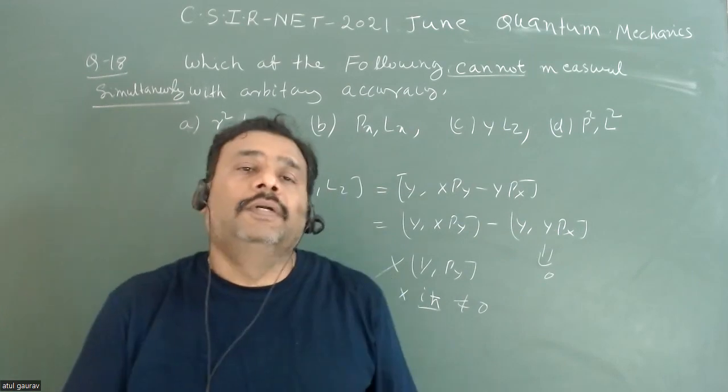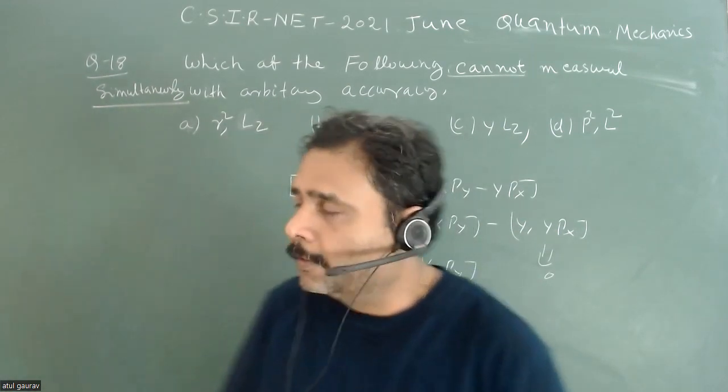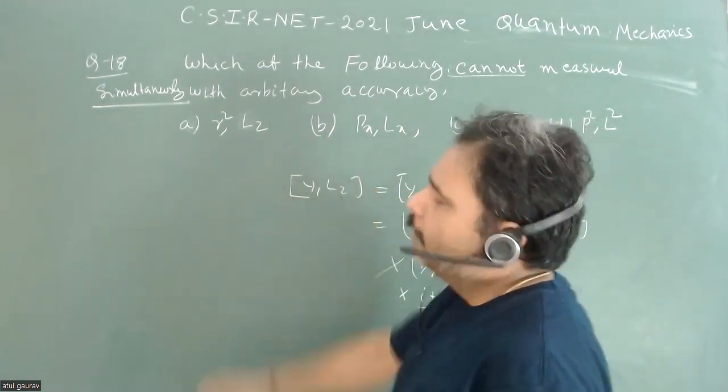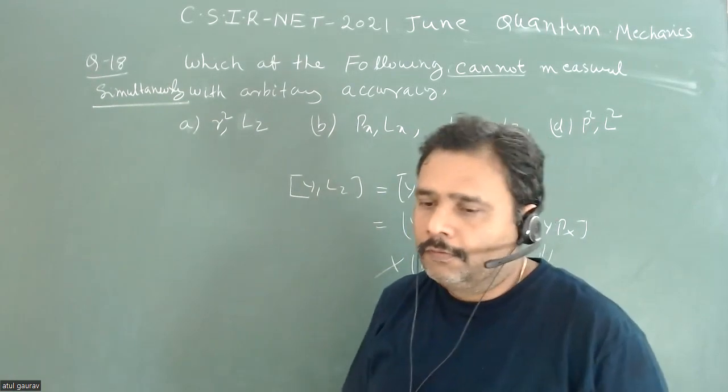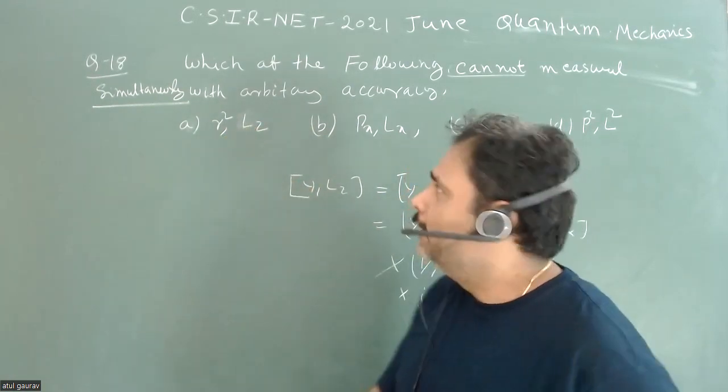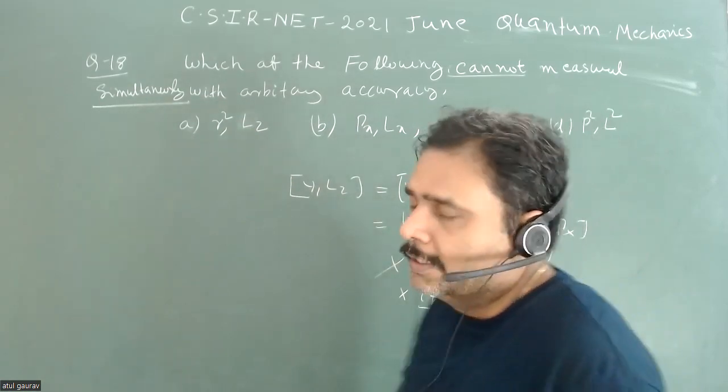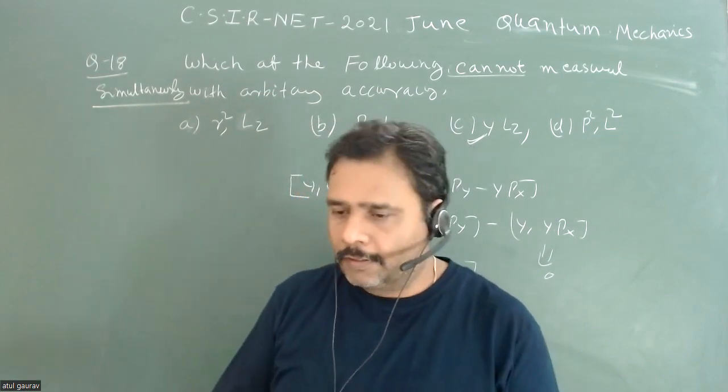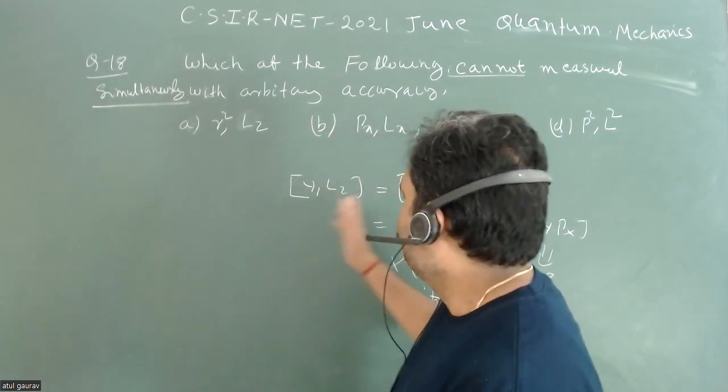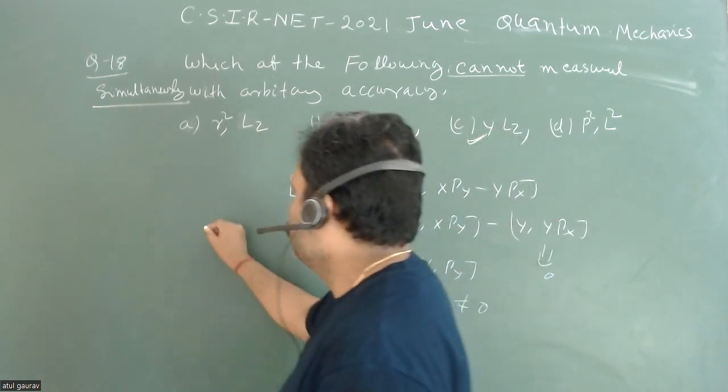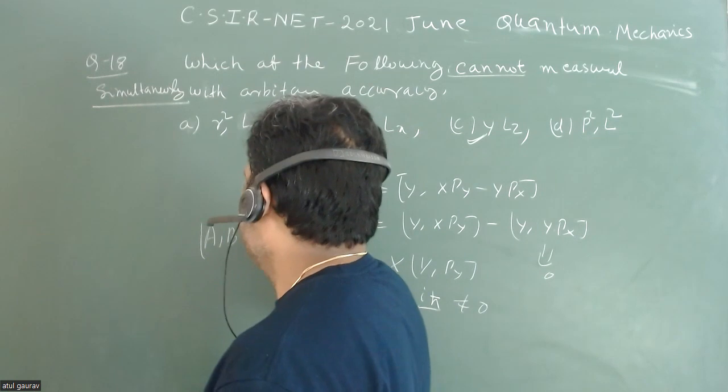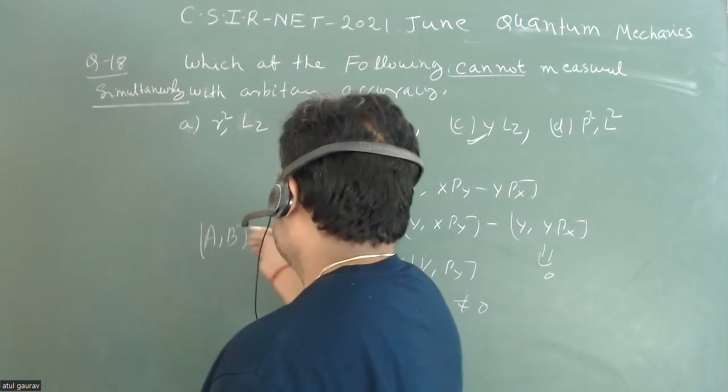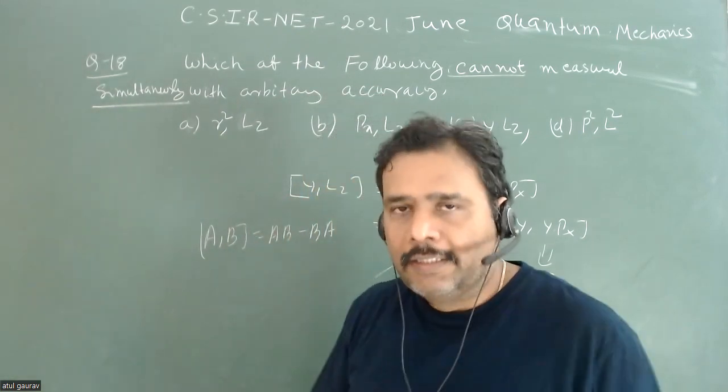Surely these two operators will not be measured simultaneously. If you check the other operators, they will be zero, so they can be measured simultaneously, but this operator cannot. This is just practice of commutation. We all know that if two operators are A and B, then the commutation is [A,B] = AB - BA, and if this equals zero, then they can be measured simultaneously.